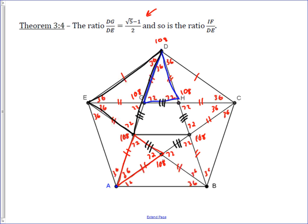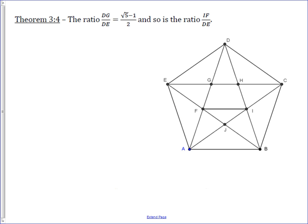Let's take a cleaner look at this. All the diagonal segments are the same, so we'll call all of those X. We know this side is Y, but we showed that angle EDF makes triangle EDF an isosceles triangle, which means D to F is also Y. So we can define GF as Y minus X, and similarly GH as Y minus X.